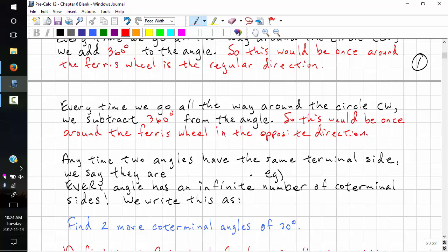Any time two angles have the same terminal side, we say they are coterminal. So for example, 30 degrees and 390 degrees are coterminal. If we add 360 to 30, we get 390.